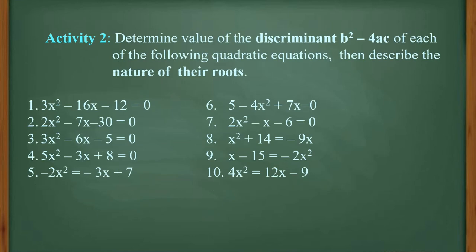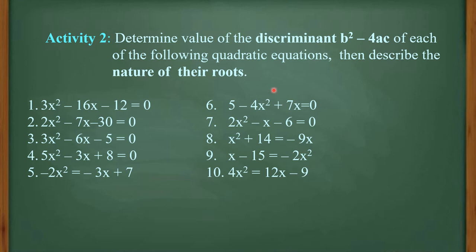Use the standard formula b squared minus 4ac to find the value of the discriminant, and you will be able to describe the nature of roots — whether they are rational or irrational, real or imaginary, with equal roots or unequal roots. There are 3 words that you can use to describe the nature of roots for each given. Good luck to all of you. Thank you so much for listening. Goodbye!